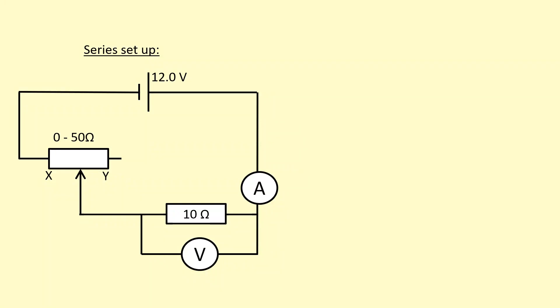In this series setup, we're using the rheostat as a variable resistor to change the voltage and current through the 10-ohm resistor. This will allow us to find the IV characteristics for that 10-ohm resistor. However, there's a disadvantage with this circuit - there's a limit to how low the voltage can get across the 10-ohm resistor.